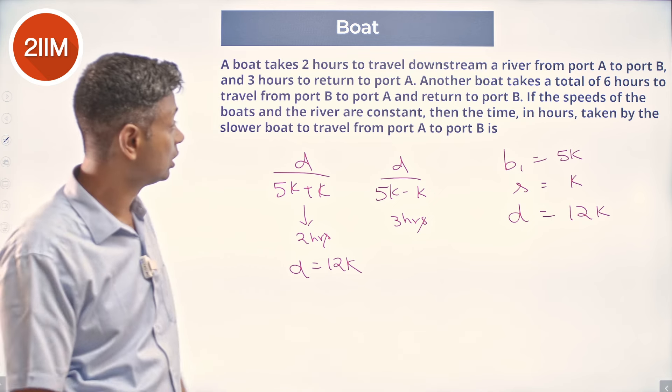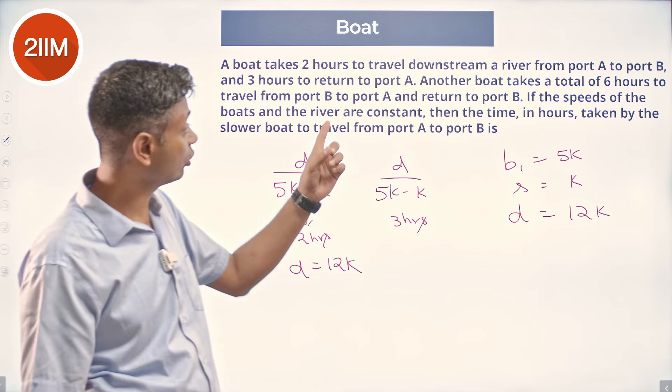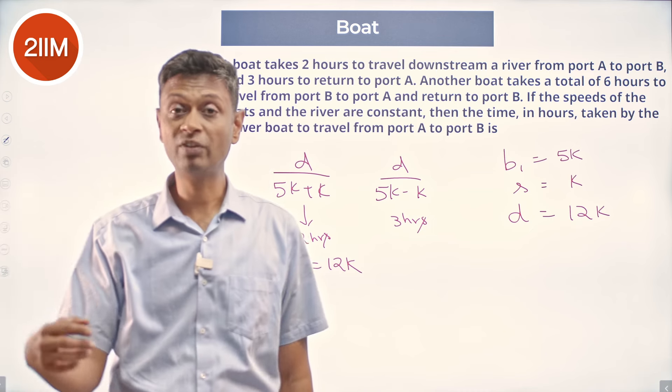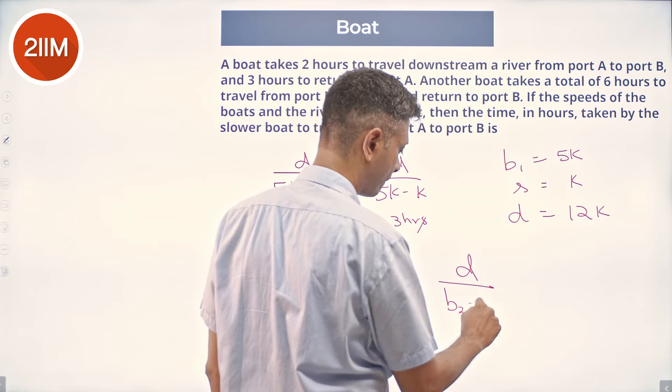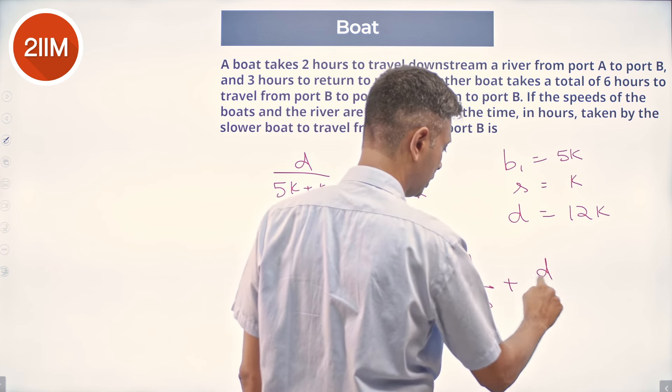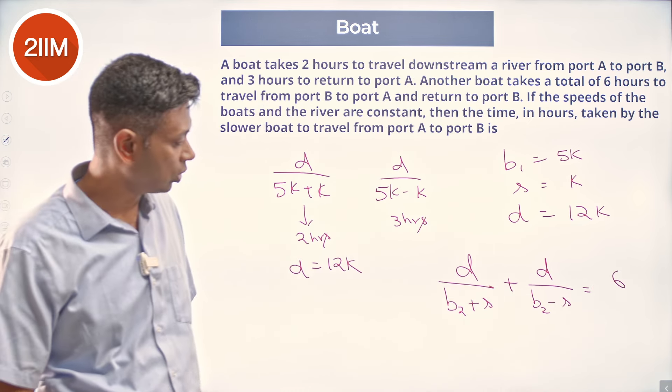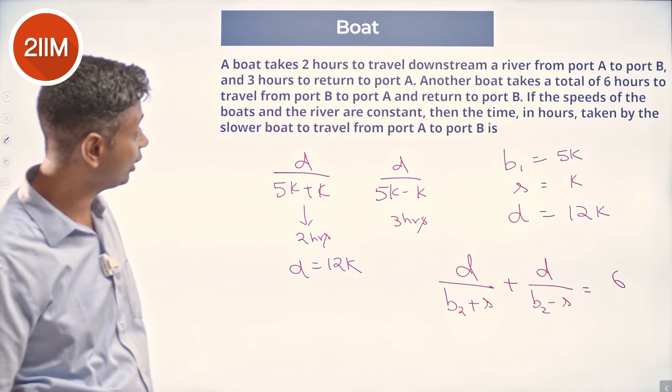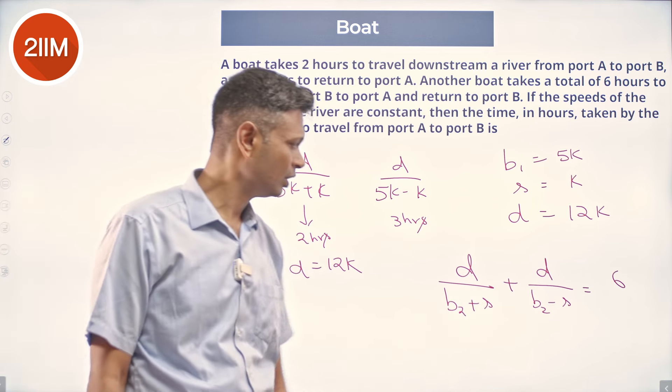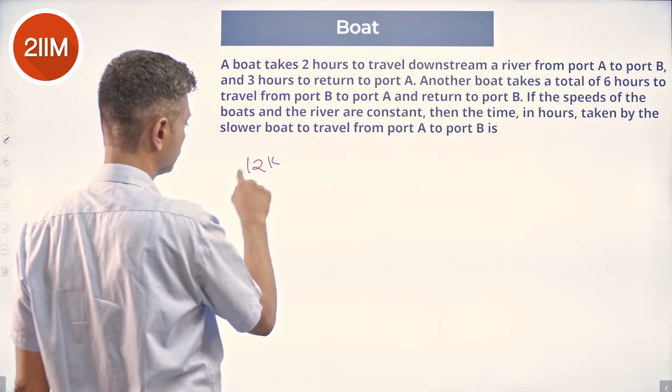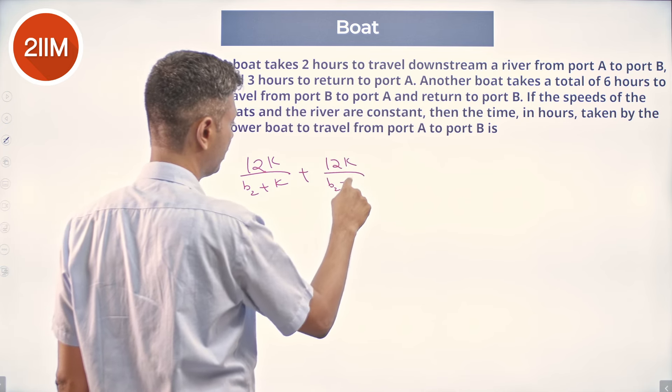What do we need to find? We need to find speed of boat 2, not just that. We need to find the time taken in hours taken by the slower boat which is boat 2 because boat 2 takes a total of 6 hours to travel from A to B to travel downstream. So, what have we got to do? We got to say D by boat 2 plus stream plus D by boat 2 minus stream is equal to 6 and then solve for boat 2.